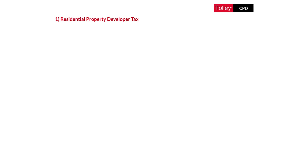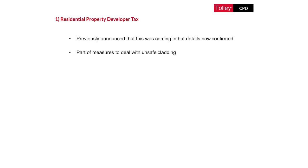The first measure is one that has been announced previously but where the details are now confirmed, and that is the Residential Property Developer Tax. This measure was announced as part of a package of measures that will enable the government to address unsafe cladding in high-rise buildings. The intention is to raise two billion pounds over 10 years from this tax, which will enable the government to finance changes to cladding in these buildings. It will apply with effect from the 1st of April 2022.